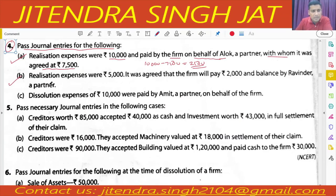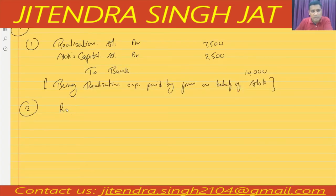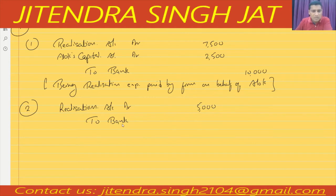Second entry — point B: realization expenses were ₹5,000. It was agreed that the firm will pay ₹2,000 and the balance will be paid by Ravinder, a partner. So total realization expenses are ₹5,000. Realization Account will be debited for ₹5,000. Credit goes to Bank for ₹2,000 — the amount the firm pays — and the balance goes to Ravinder's Capital Account.